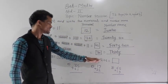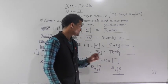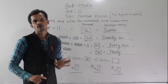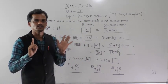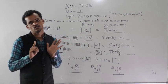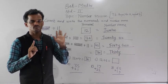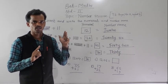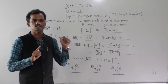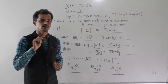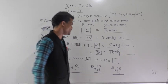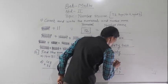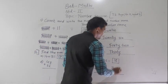Then 12 plus 6. After 12, count 6 fingers forward: 13, 14, 15, 16, 17, 18. So 12 plus 6 equals 18.